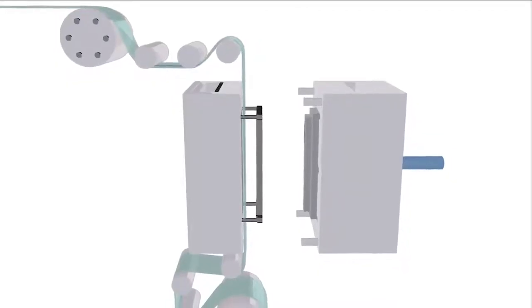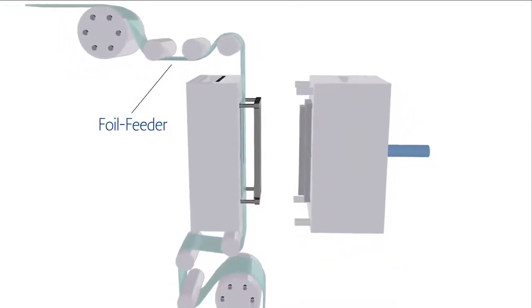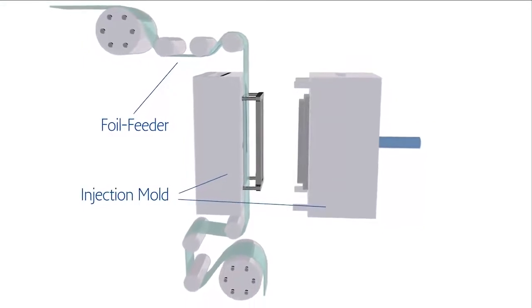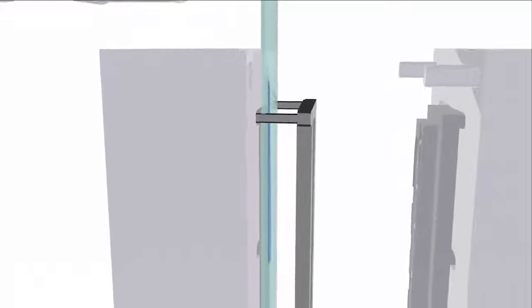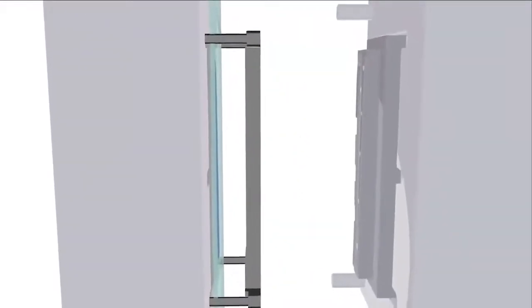Then the roll of printed film is set in a foil feeding system, which is mounted onto the injection molding press. The film is fed down between the two mold halves running closely along the cavity surface.